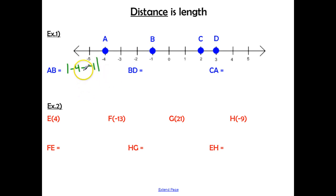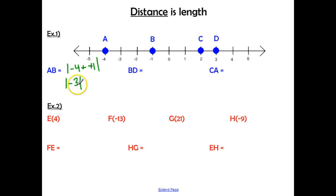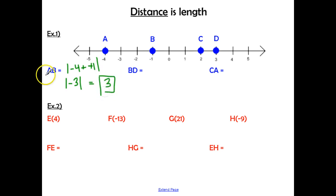Remember, when you have minus a negative, that becomes plus a positive. So we actually have the absolute value of negative three. The absolute value of negative three means the distance negative three is away from zero, so our final answer is three. The length of segment AB is three units long.